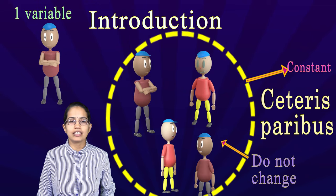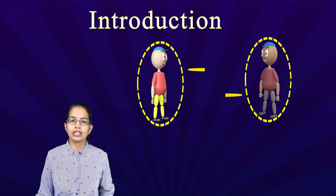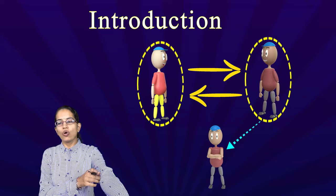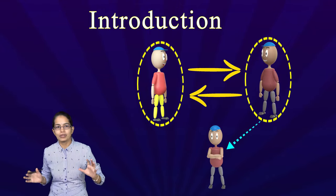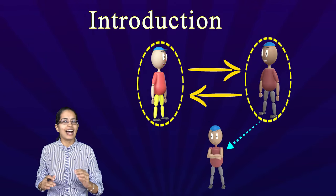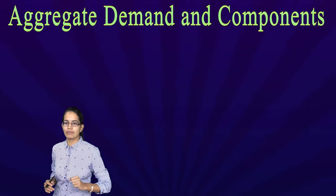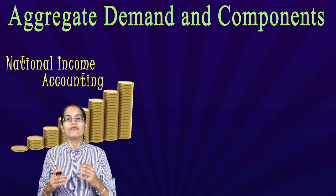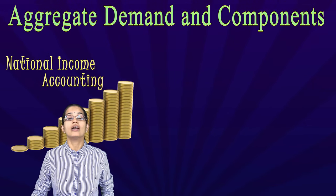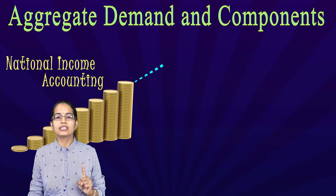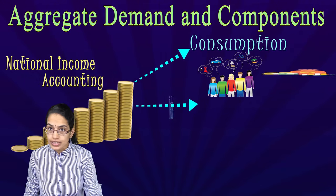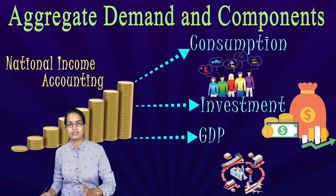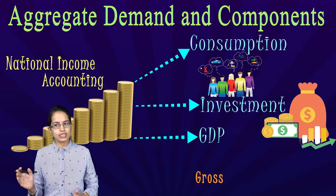Let's move into the income and employment scenario. But before that, let's understand the demand and its components. In the previous chapters on national income accounting, we take into account three things: the first is consumption, the next is investment, and the third is the final output of goods and services in terms of GDP, which is the gross domestic product.